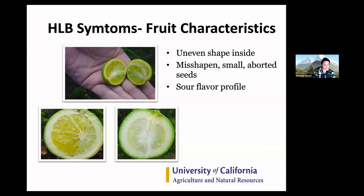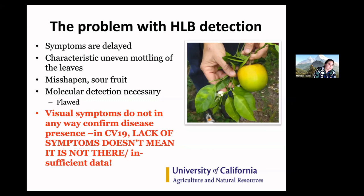HLB is not easy to detect. The symptoms are delayed — again, similar to COVID-19, there is an incubation period, and the same is true with HLB. This characteristic uneven mottling of leaves is really not a good way to detect the disease. If you have sour and misshapen fruit, it's much more likely that you have HLB, but by that time your tree also looks really bad.